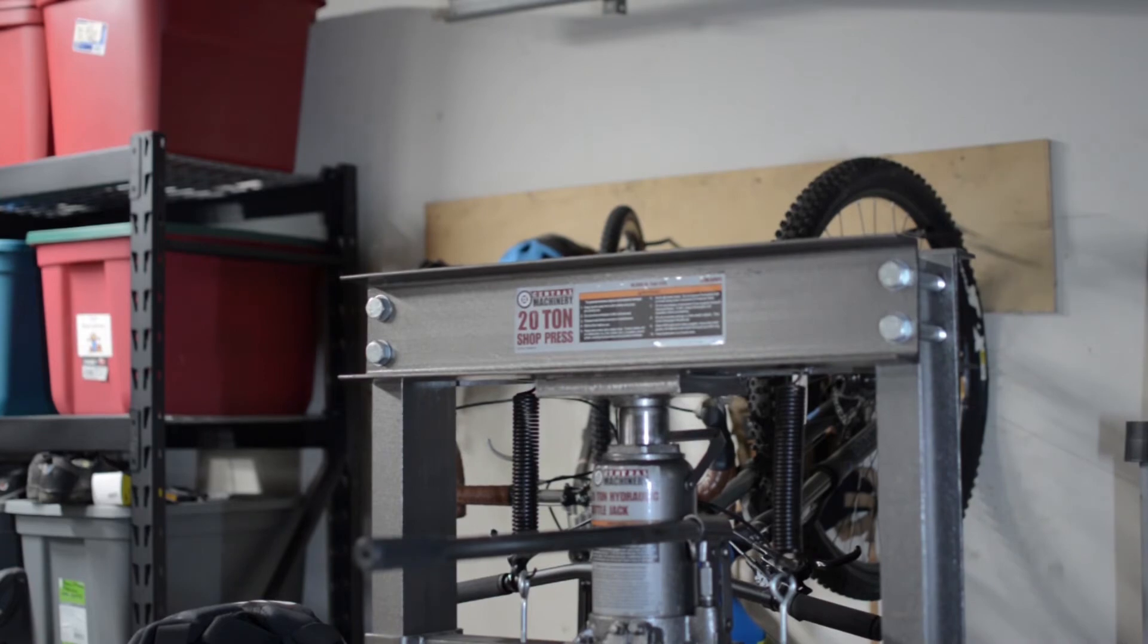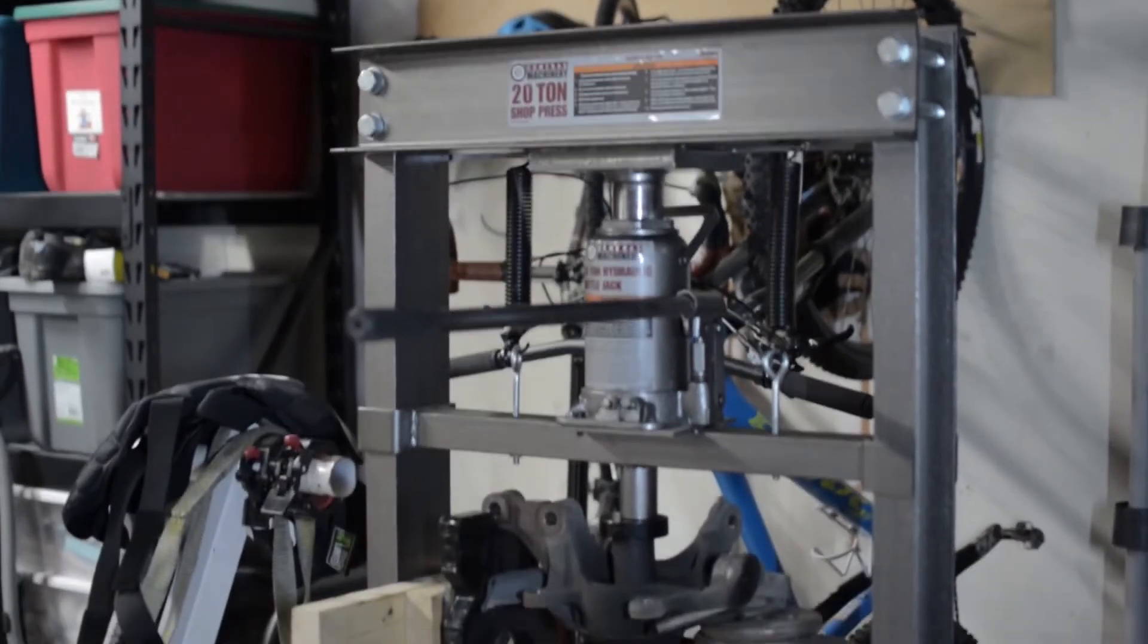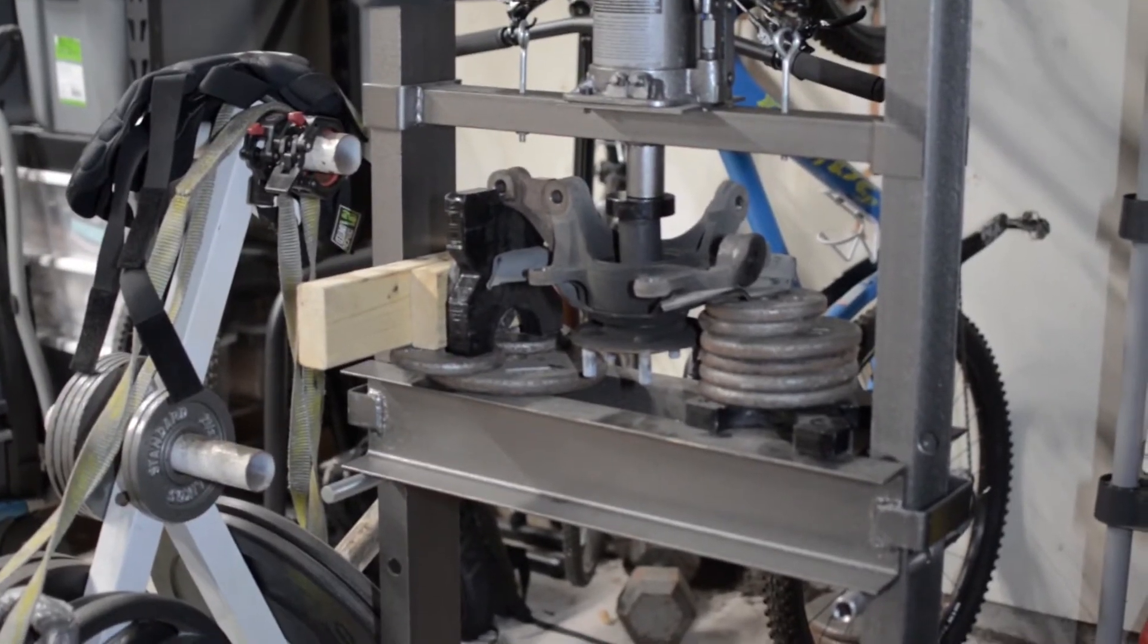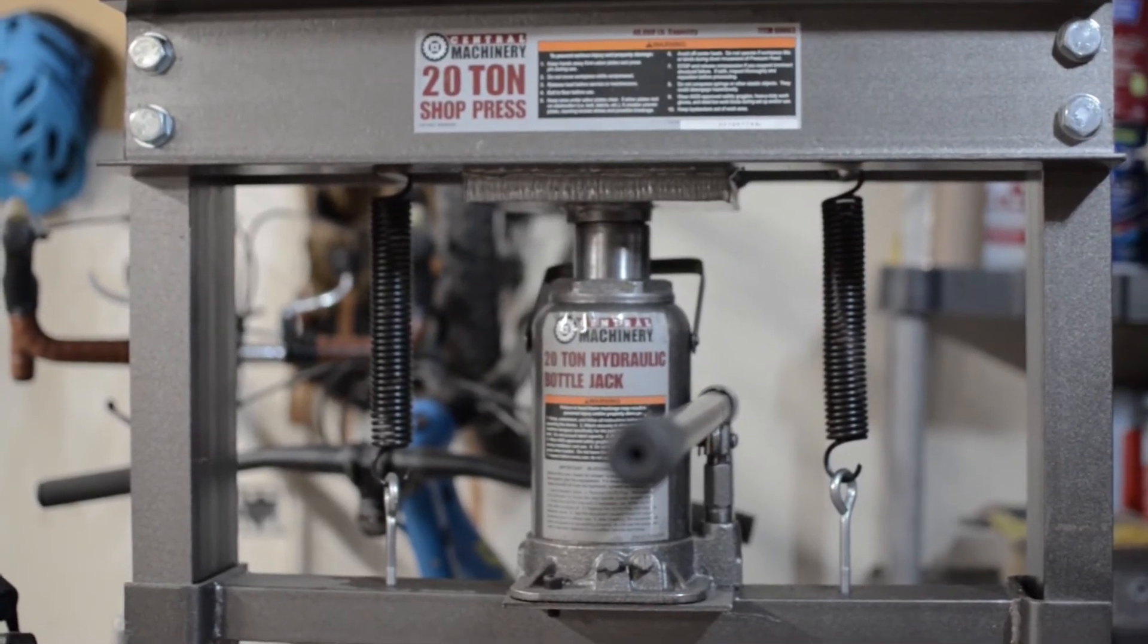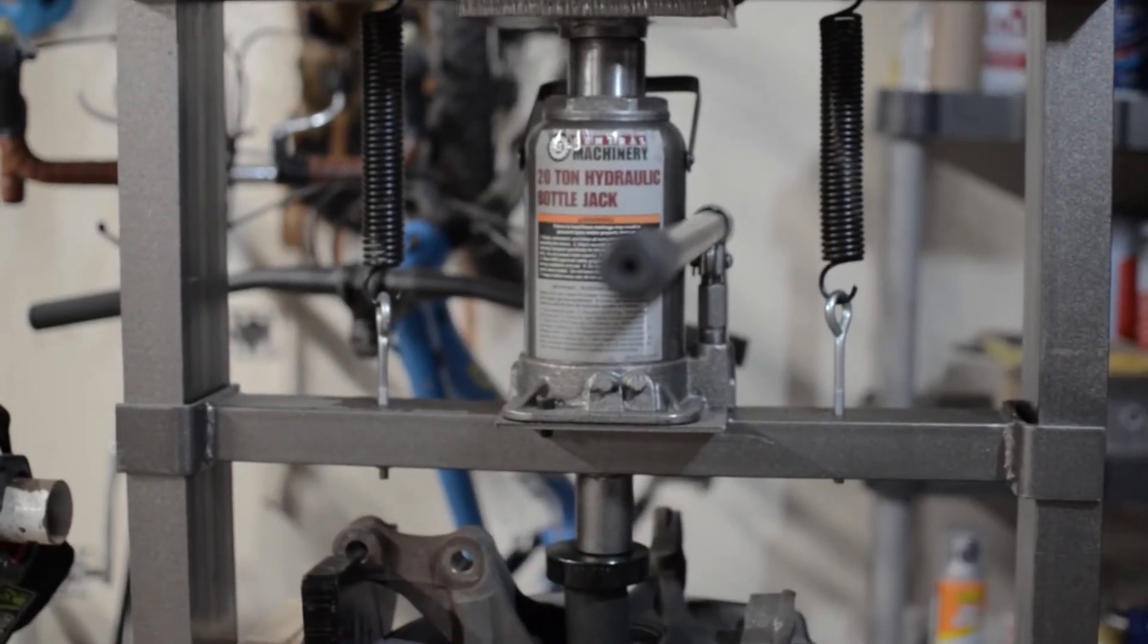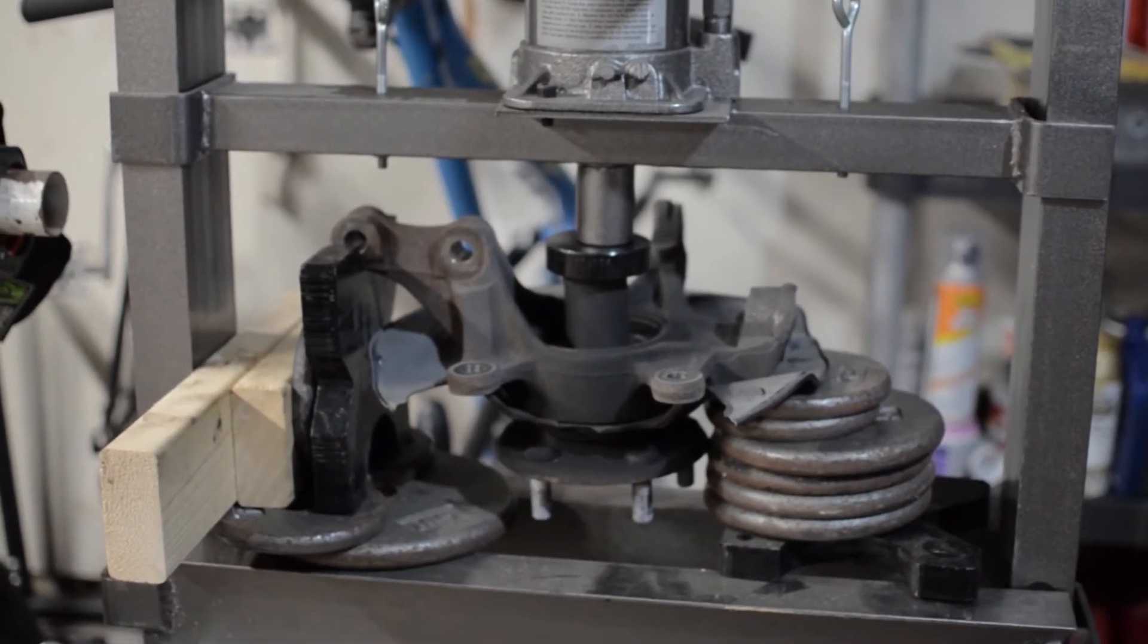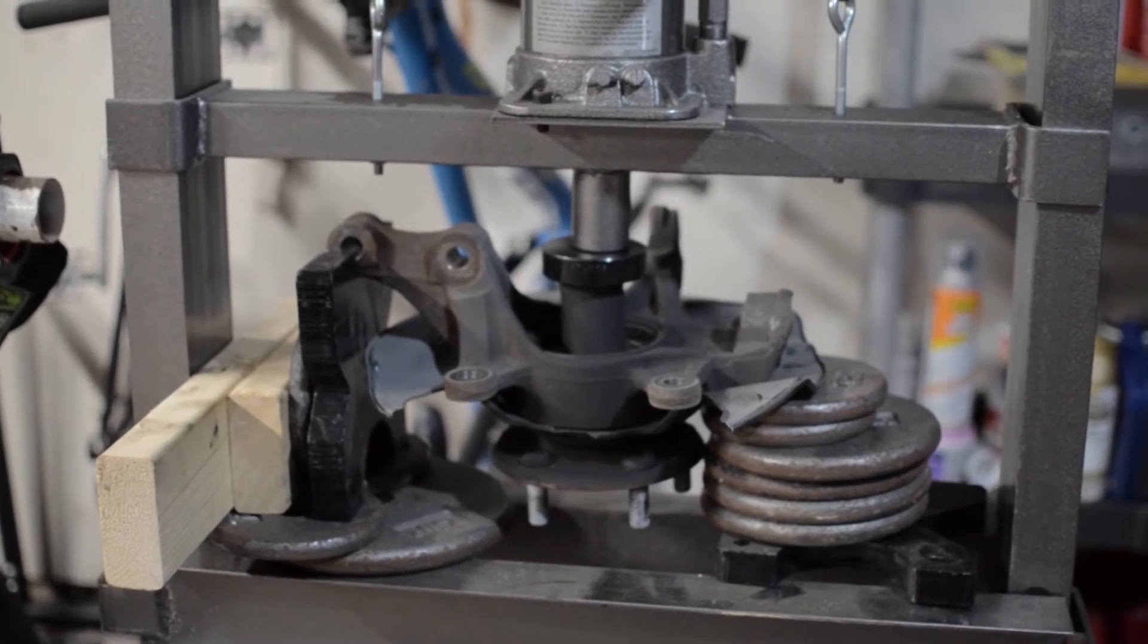You can see the actual steering knuckle. When you're using a press that isn't easy where you can just put the piece you're trying to press out and place it on the press, you've got to get creative and figure out a way to safely press out whatever you're trying to press out—in this case, the steering knuckle.